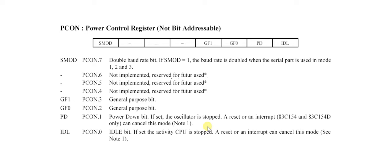This is the 19th video of 8051 theories. My name is Milansha and today's topic is PECON. PECON is the power control register. It is an 8-bit register. It is byte addressable and its address is 87H. Its bits are used to control the mode of power saving circuit — either idle mode or power down mode — and also one bit is used to modify the baud rate of serial communication.